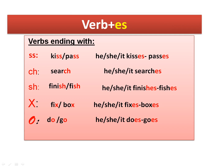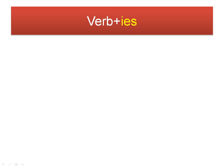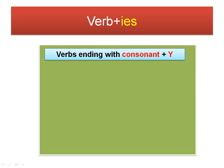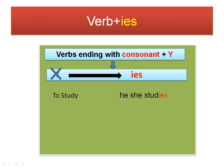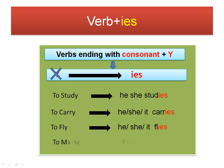Rule two: verb plus 'ies'. We add 'ies' with verbs ending in a consonant plus 'y'. We delete the 'y' and add 'ies'. For example: 'to study' — he/she studies. The 'y' is deleted and replaced by 'ies'. 'To carry' — he/she carries. 'To fly' — he/she flies. 'To marry' — he/she marries.